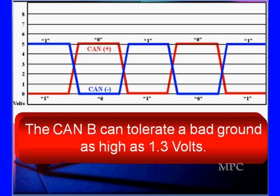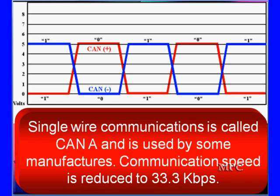CAN-B can tolerate ground voltages as high as 1.3 volts. If this amplifier has 1.3 volts of ground voltage instead of zero, we can tolerate it. CAN plus or high goes to five volts to be dominant. CAN minus or low goes to zero volts to be dominant. This can tolerate 1.3 volts of ground noise.